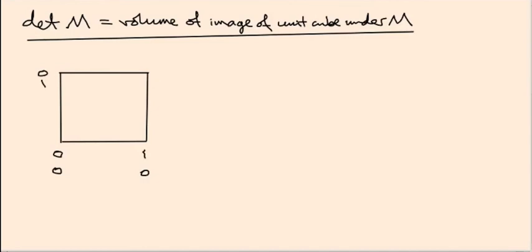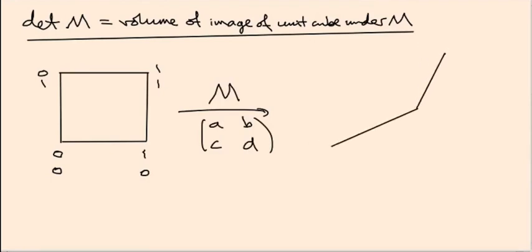Now I'm going to apply my matrix M, which I'm just going to call [a,b; c,d] for the entries. The result of doing this is going to be some parallelogram. Where are the vertices? The origin stays where it is, (1,0) goes to the first column (a,c), (0,1) goes to the second column (b,d), and then this point is just the sum of those two: (a+b, c+d).